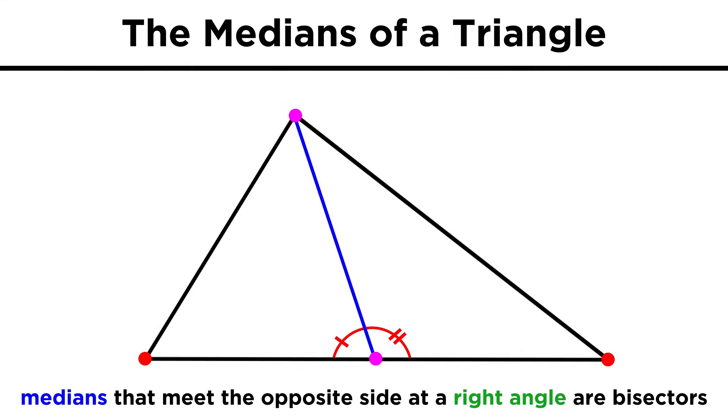If they were right angles, this median would also be a bisector, and we would have a right triangle. But it's not, so it's just a median.